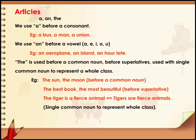The is used before a common noun, before superlatives, and with a single common noun to represent a whole class. Examples: the sun, the moon (before a common noun); the best book, the most beautiful (before superlative); the tiger is a fierce animal — tigers are fierce animals (single common noun to represent a whole class).